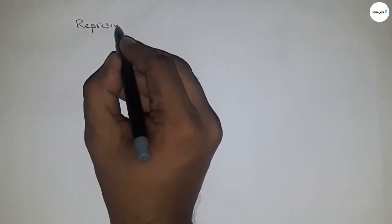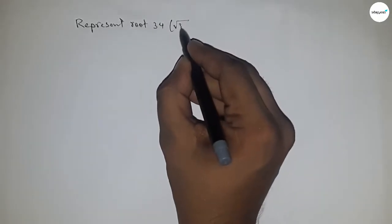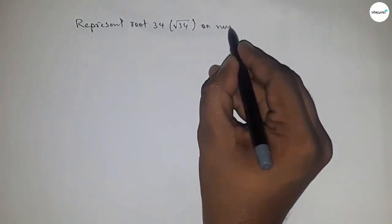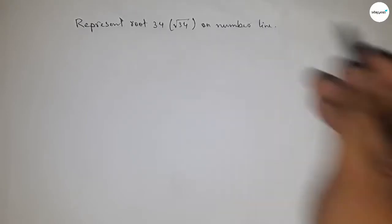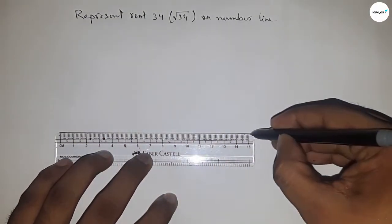Hi everyone, welcome to accessory classes. Today we're talking about how to represent root 34 on a number line. So in this video, we'll be representing root 34 on number line. Let's start by first drawing the number line.